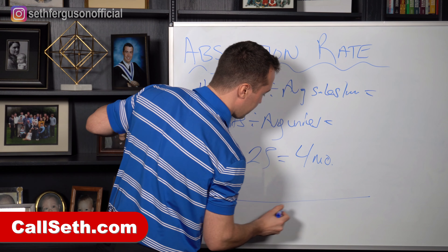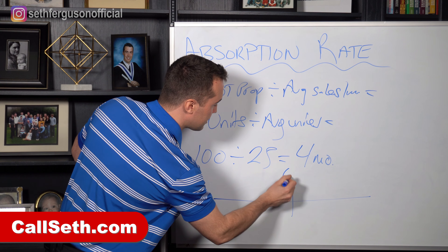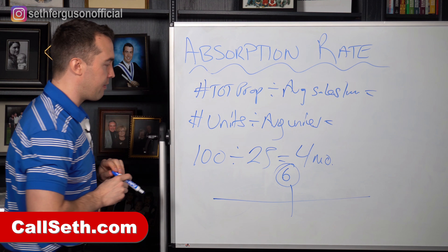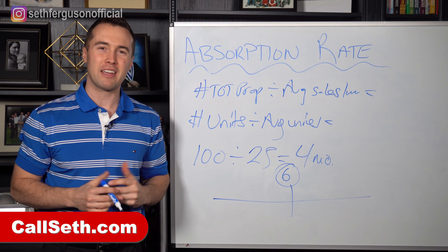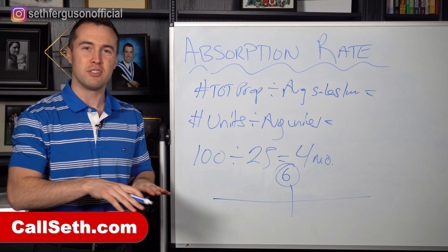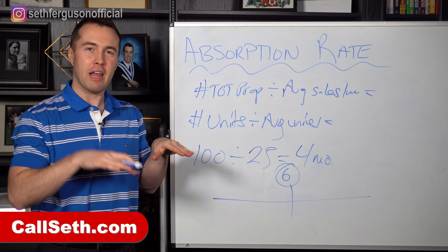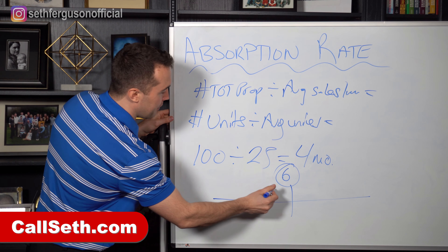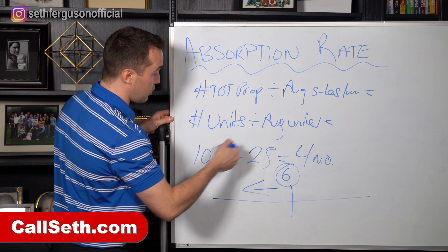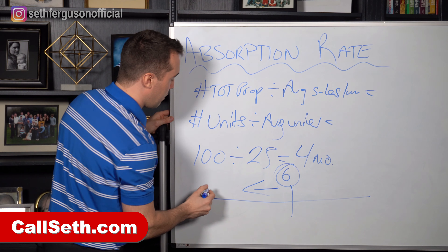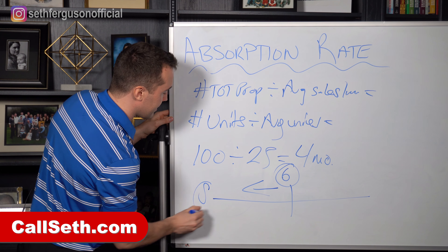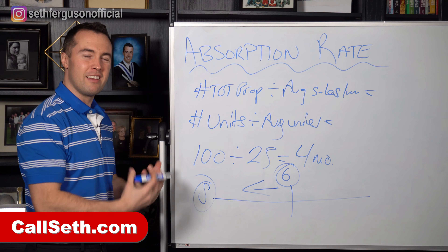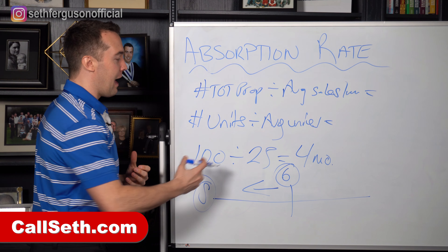This is where it becomes important. Looking at the market timeline, at around six months worth of inventory we have balanced market conditions — prices don't go up, prices don't go down, everything is very flat and stable. But if we have less than six months worth of inventory — in this example, four months — we would be more on the seller's side of the market, because there is less product and it's being absorbed at a much quicker rate.